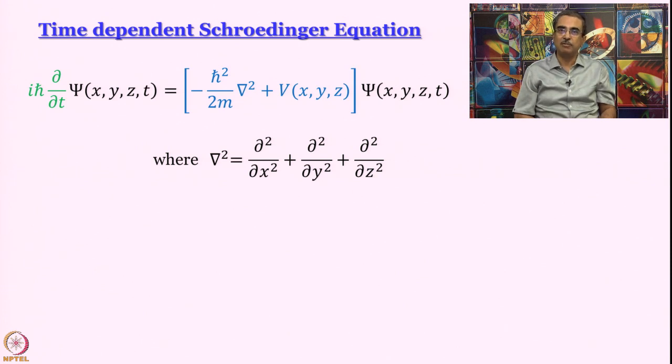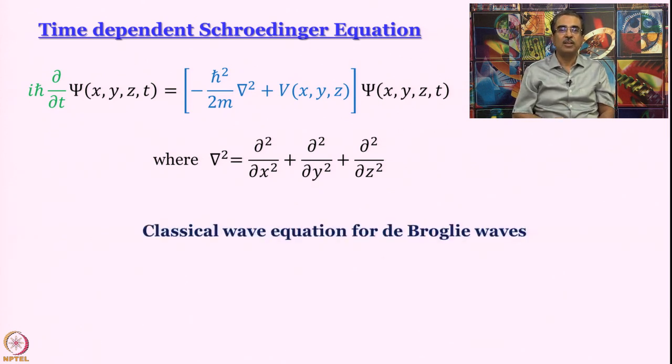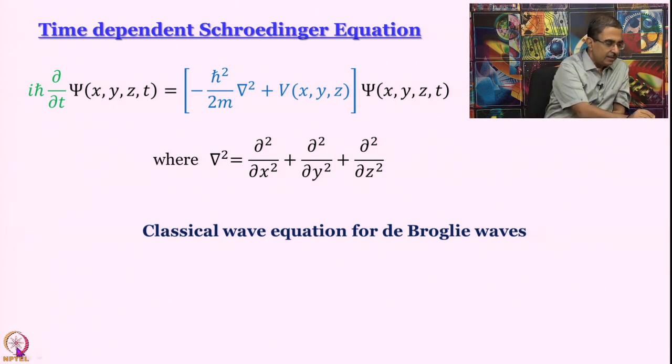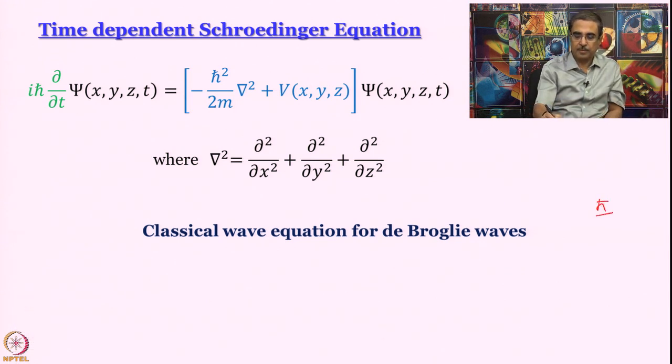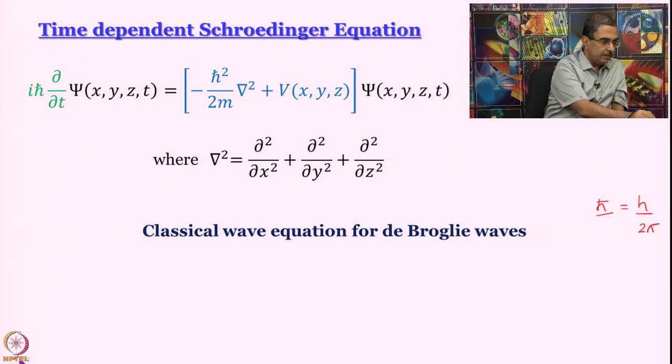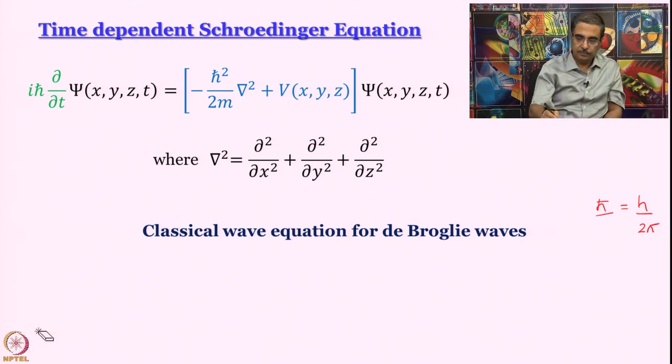That essentially describes what is going to be the displacement from mean position amplitude as a function of space as well as time. So Schrodinger thought, can we write classical wave equation for de Broglie wave? In many books, you will see a so called derivation of Schrodinger equation. Please be advised that Schrodinger equation cannot be derived, it can be arrived at, it is a postulate. But even postulates have some basis, the basis of Schrodinger equation is that it is a classical wave equation for de Broglie waves to start with. And I will not even show you what the classical wave equation is, if required you can study it in physics course. But when he wrote it like this, classical wave equation for de Broglie waves, Schrodinger got an equation that looked like this.